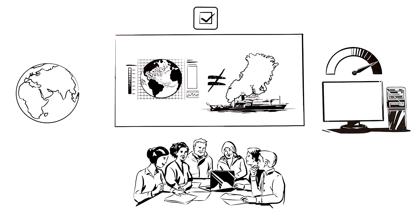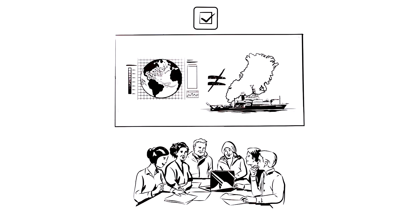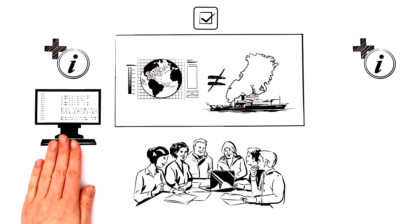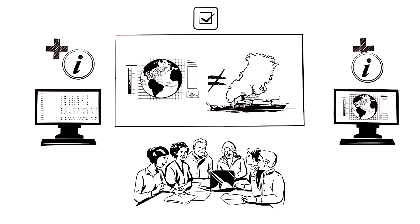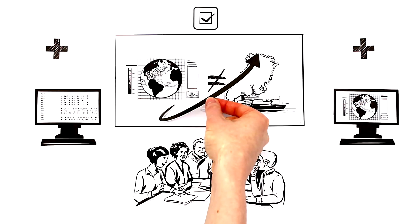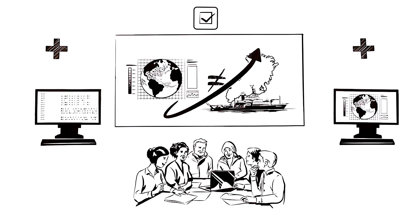If discrepancies arise, the teams jointly explore whether additional information will have to be taken into account in the algorithms or in the model. This improves the results and with it the climate projections.